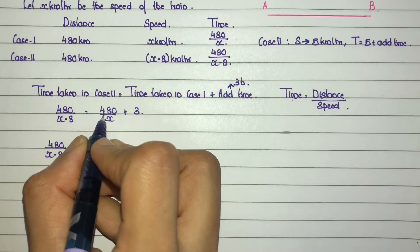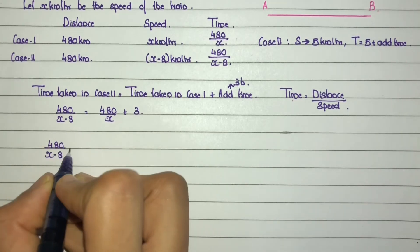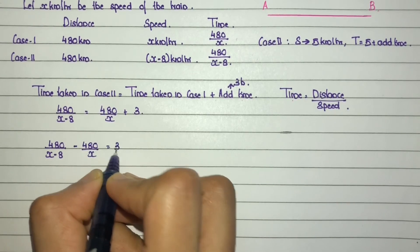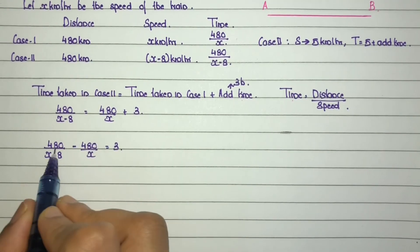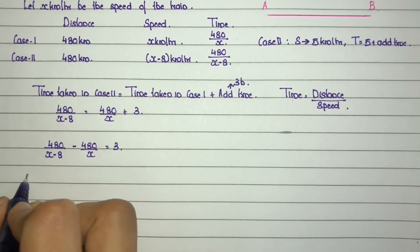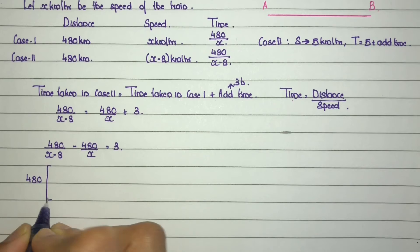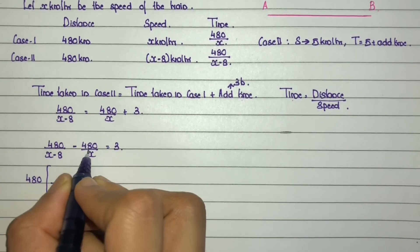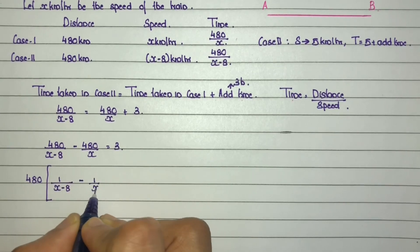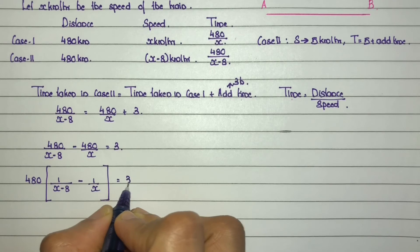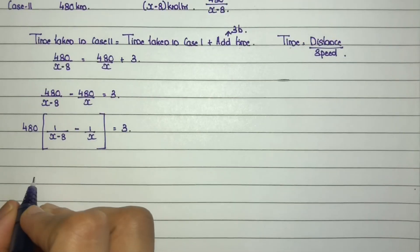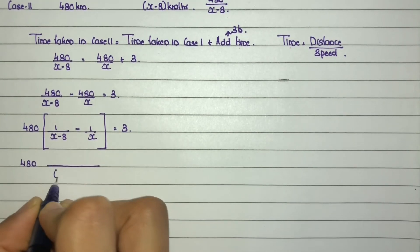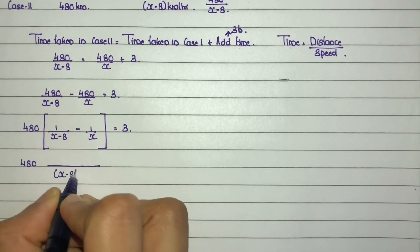Rearranging: 480 divided by (x minus 8) minus 480 divided by x equals 3. Taking 480 as a common factor: 480 into [1 divided by (x minus 8) minus 1 divided by x] equals 3. Finding LCM as x(x minus 8).